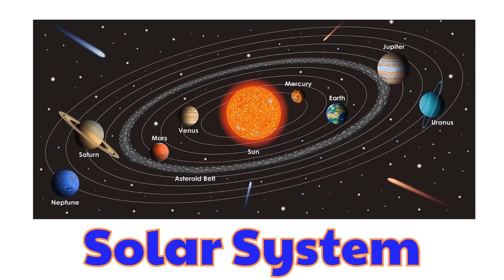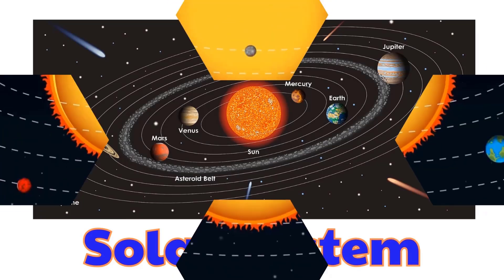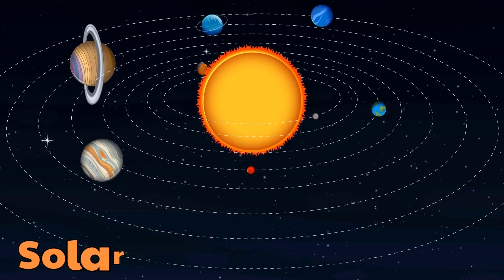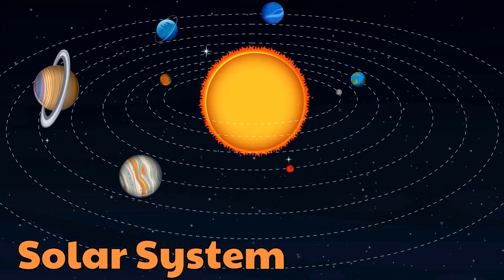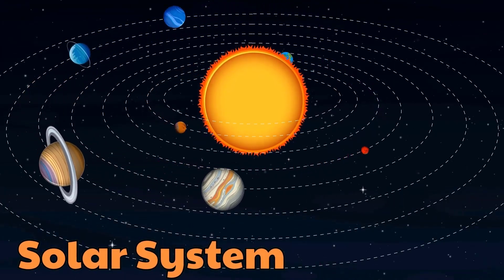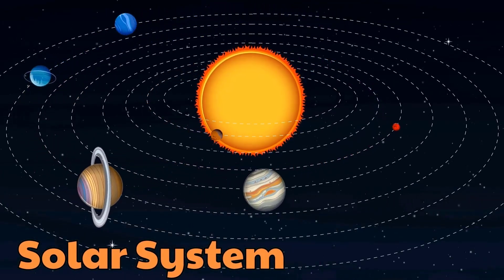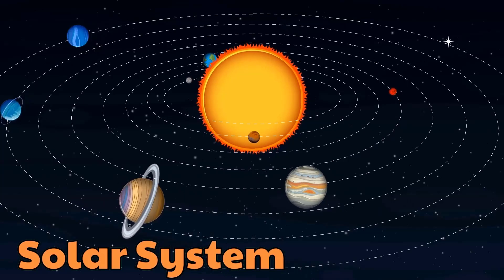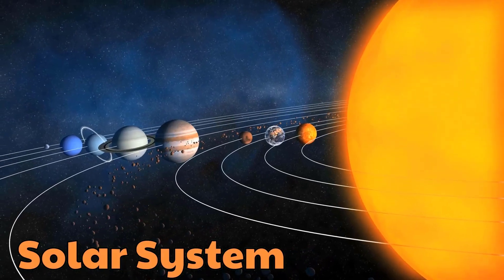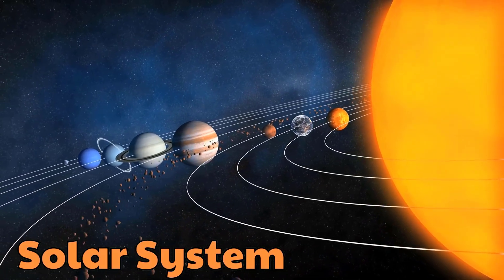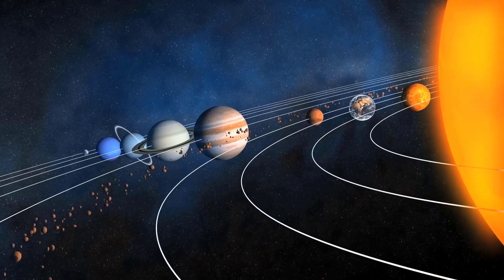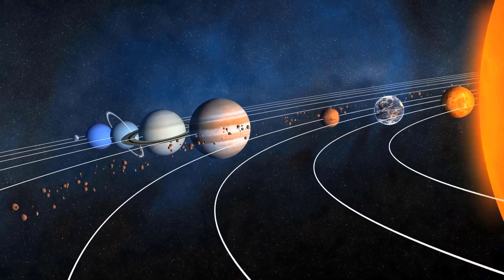Solar System. This is the solar system. The solar system includes the sun and all the planets and objects held by its gravity.